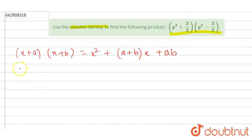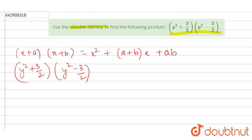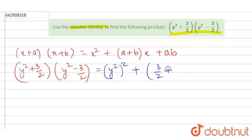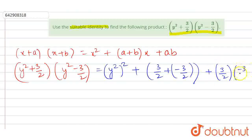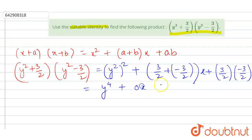So, put the values here: y squared plus 3 by 2, multiplied by y squared minus 3 by 2. Then: y squared squared, plus — the value of a is 3 by 2, plus the value of b is minus 3 by 2 — gives 0 for the middle term, times x.